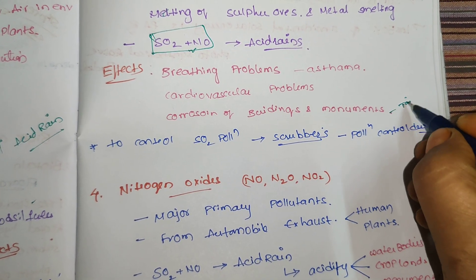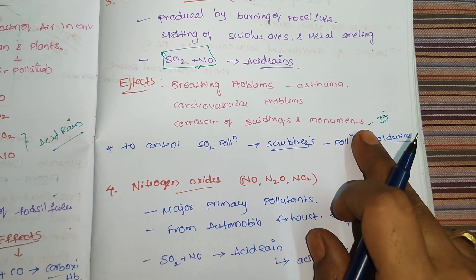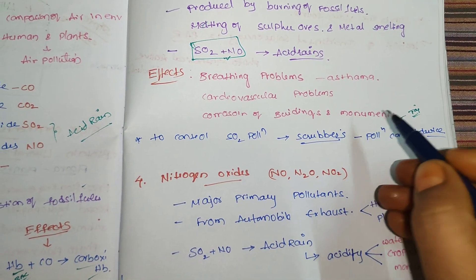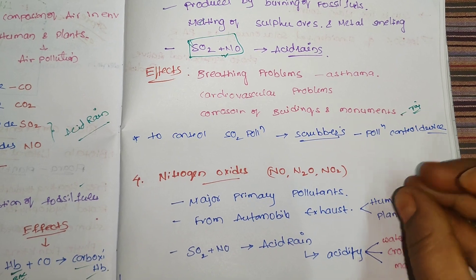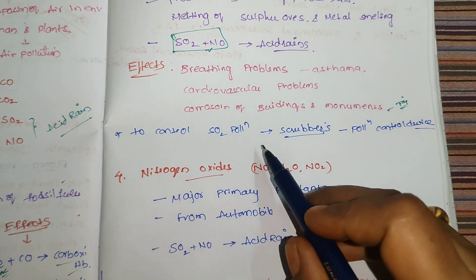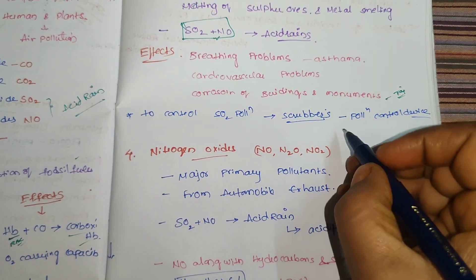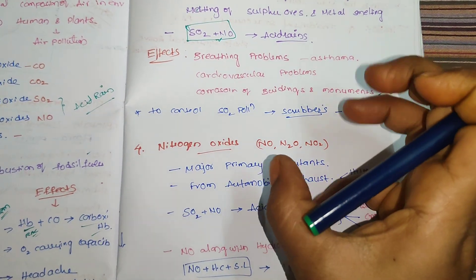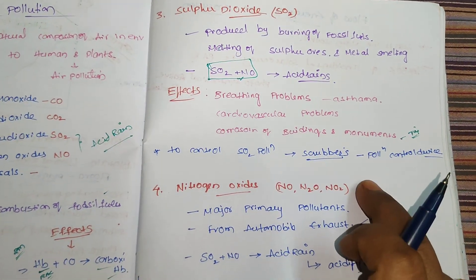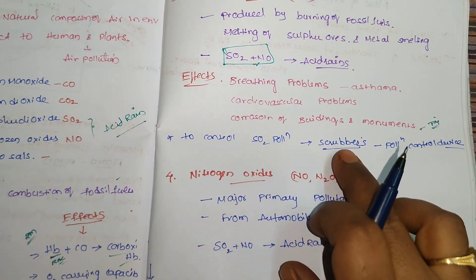For example, the Taj Mahal in Agra — due to acid rain and sulfur dioxide, the color of monuments is changed. This is a previous MCQ topic regarding corrosion of buildings. You can choose sulfur dioxide as the answer. To control sulfur dioxide pollution, scrubbers are used in factories. Scrubbers are a pollution control device that absorbs sulfur dioxide, similar to the smog towers in Delhi.